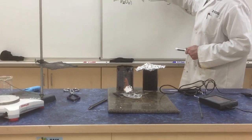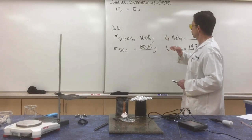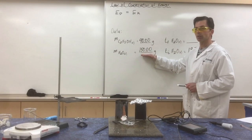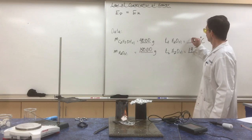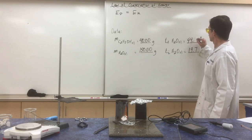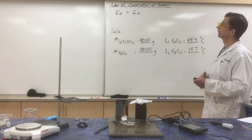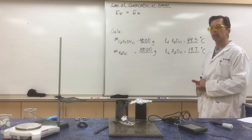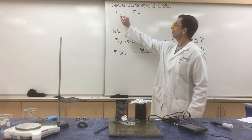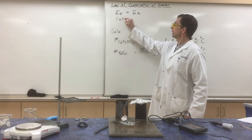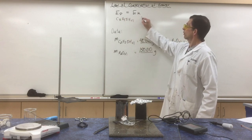Just to review: 40 grams of ethanol raised the temperature of 150 grams of water from 19.7 degrees Celsius to 99.3 degrees Celsius. We have approximated the law of conservation of energy, where the potential energy of the ethanol is equal to the kinetic energy gained by the water.